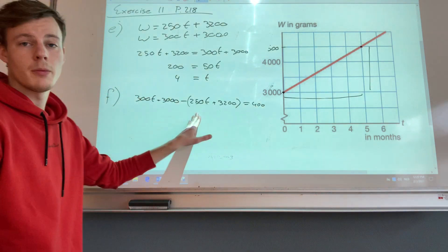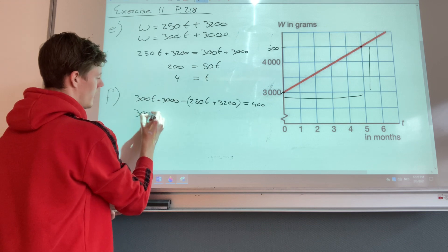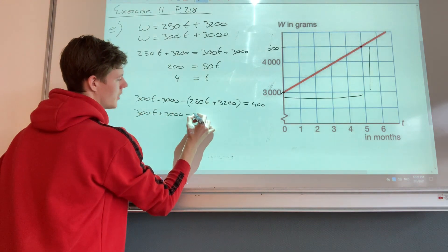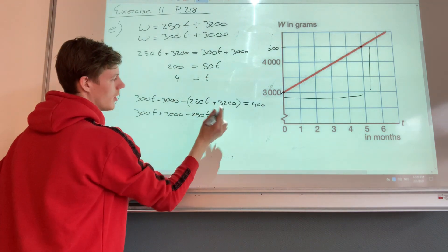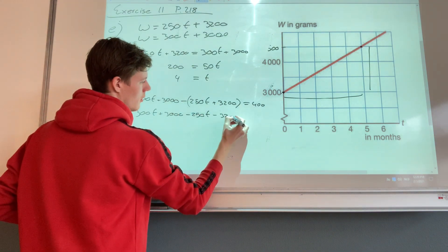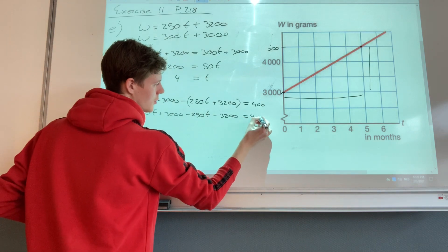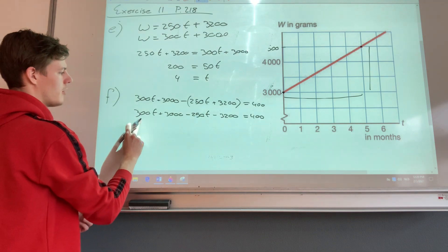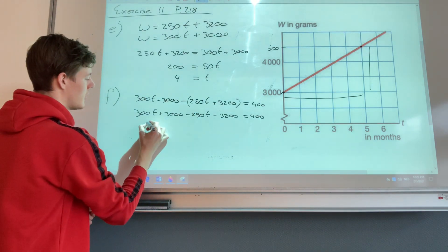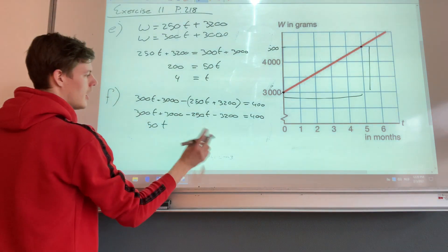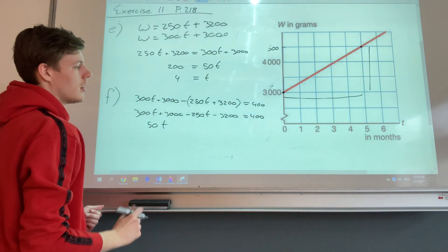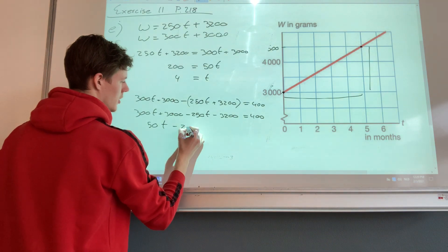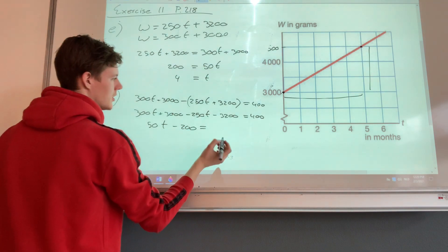Alright, so first get rid of the brackets. So we copy this. Then we have minus 250t and minus 3,200 equals 400. Then we simplify this side. So we have 300t minus 250t gives 50t, and 3,000 minus 3,200 is minus 200. And this equals 400.